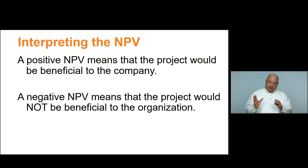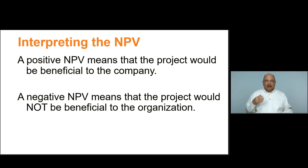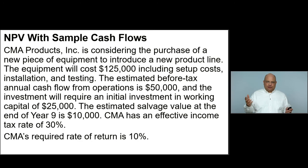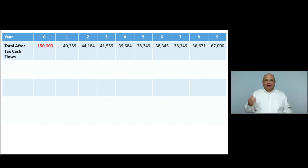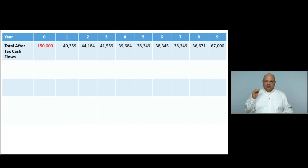Now we're going to turn our attention to doing a net present value calculation. We're going to go back to the example we've already set up — all of those cash flows we calculated. We're going to go all the way through and calculate the net present value of that investment for CMA Products, and what we're looking at is a 10% return. We start with our after-tax cash flows for each year. We've already calculated all of this: $150,000 investment, $40,359 in year one, $44,184 in year two, and so on.